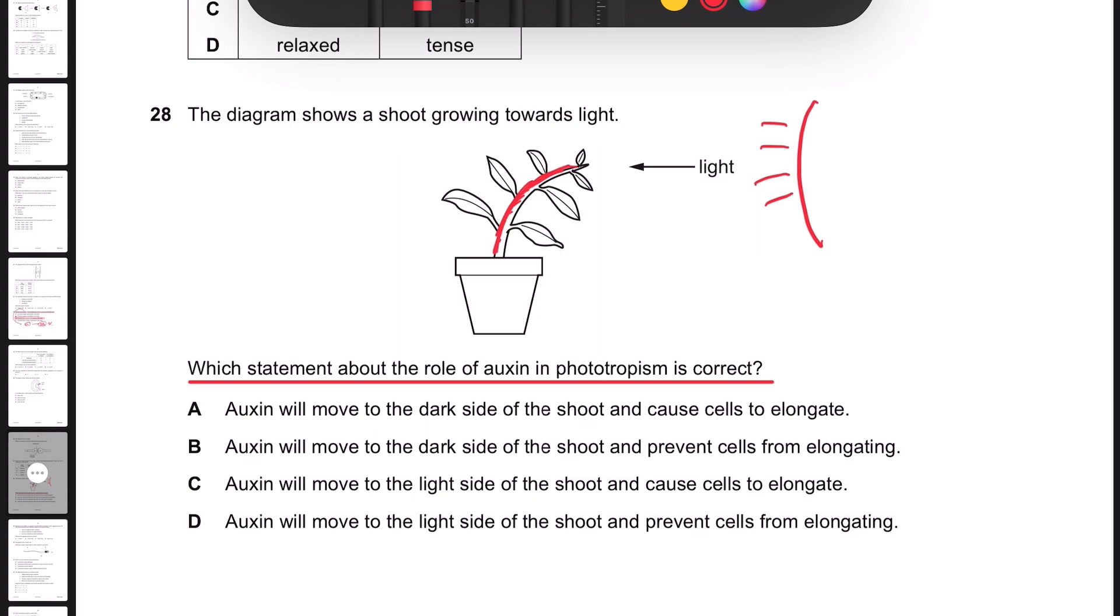So when the tip of the stem produces auxin, it travels to the shaded area.